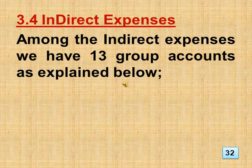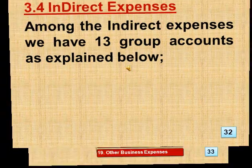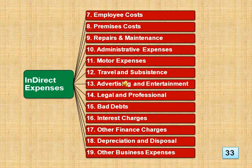Section 3.4 Indirect Expenses: Among the indirect expenses we have 13 group accounts. This includes: employee costs, premises costs, repairs and maintenance, administrative expenses, motor expenses, travel and subsistence, advertising and entertainment, legal and professional, bad debts, interest charges, other finance charges, depreciation and disposal, plus other business expenses.